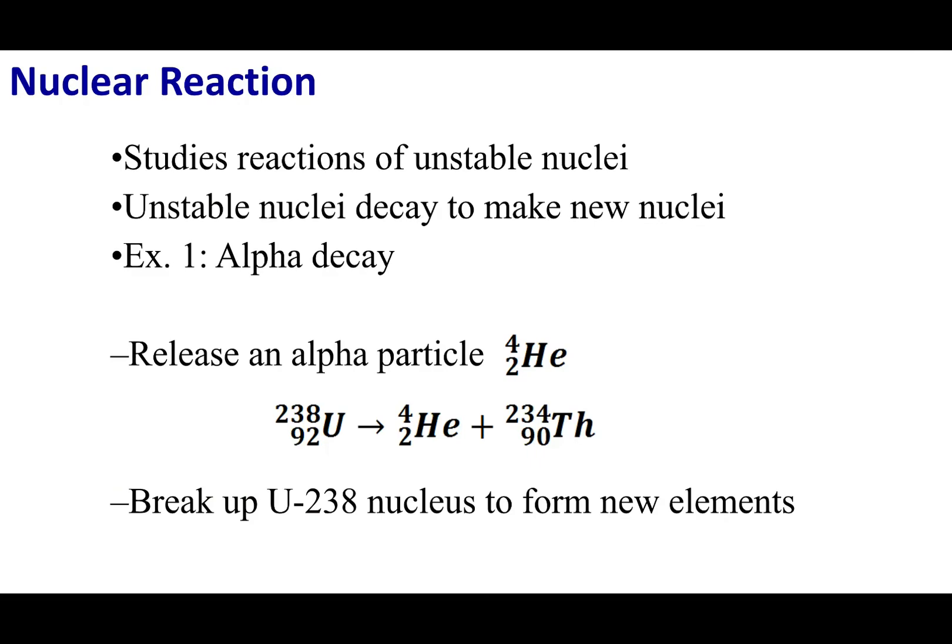What happens when you make one of these unstable nuclei? Anything that's unstable is going to want to break down and go to its lowest energy form. So an unstable nucleus is going to decay and try to get to a stable nucleus. We are going to change the composition inside the nucleus. This chapter is about changing the nucleus, and we're going to go through a series of reactions.